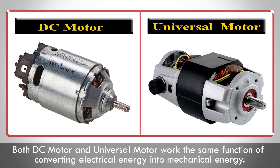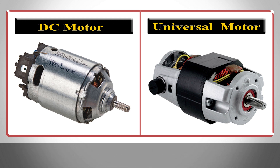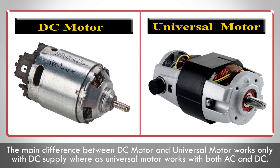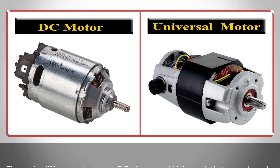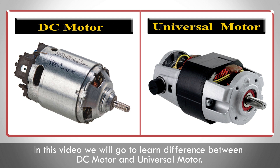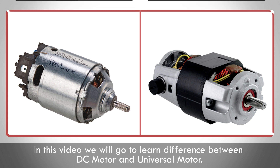Both DC motor and universal motor work the same function of converting electrical energy into mechanical energy. The main difference is that a DC motor works only with DC supply, whereas a universal motor works with both AC and DC. In this video, we will learn the difference between DC motor and universal motor.